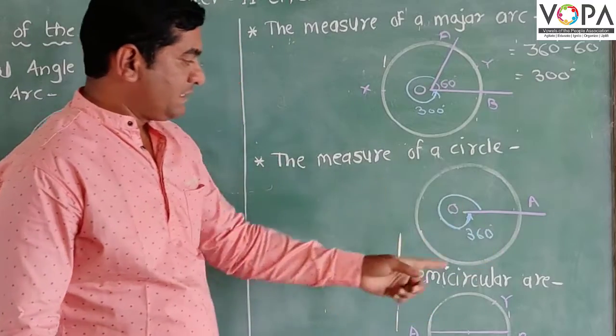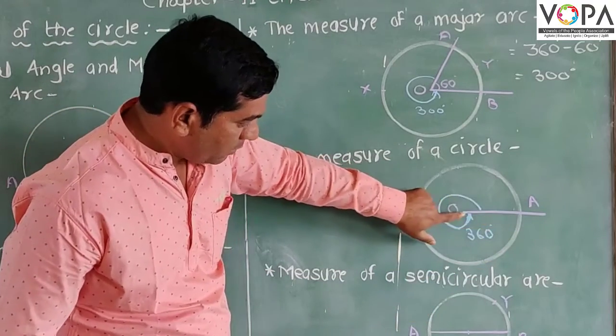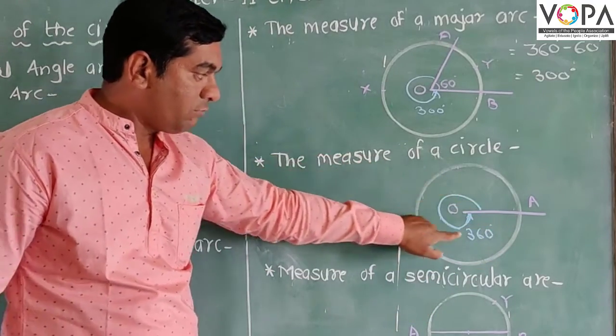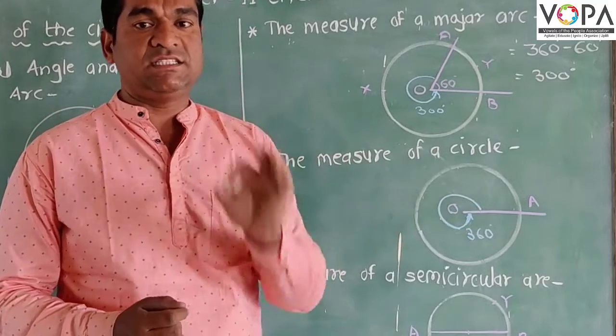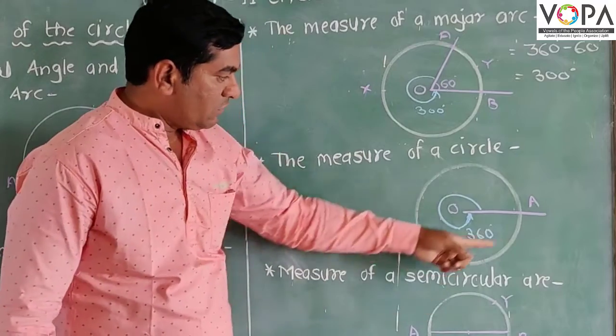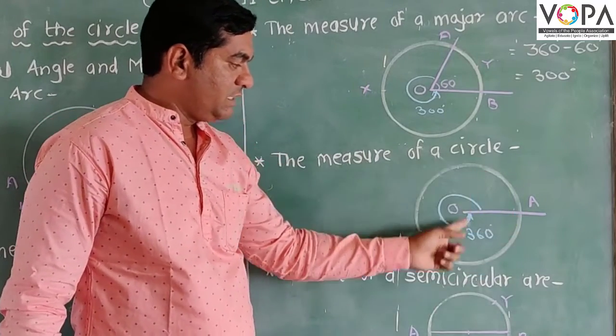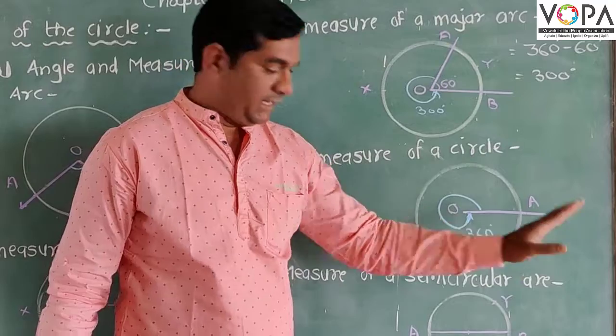Because the measure of the circle means from this A, if you complete the whole rotation, in this case you move only in 360 direction. That is why the value of the measure of a circle is already in 360 degrees.